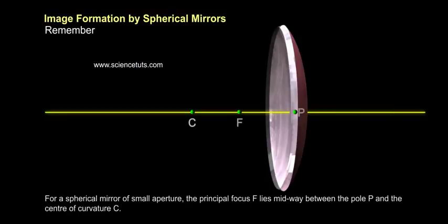Remember, for a spherical mirror of small aperture, the principal focus F lies midway between pole P and the center of curvature C.